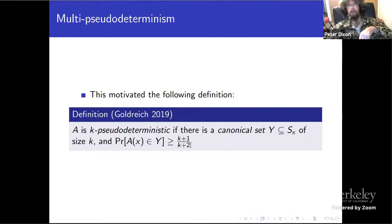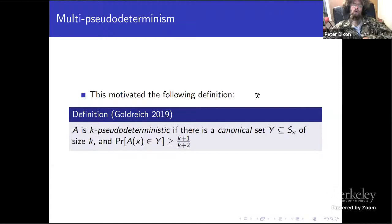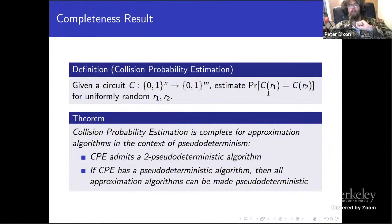In multi-pseudo-determinism, instead of a single canonical solution, you have a canonical set of bounded size, and an algorithm that lands in that set with sufficiently high probability. This specific probability threshold is important: if you achieve it, you can amplify by running many times and taking the most common value; below this threshold, amplification no longer works.